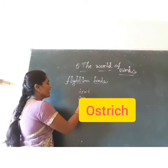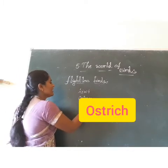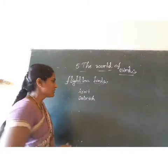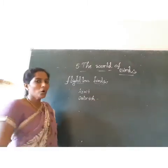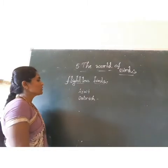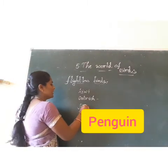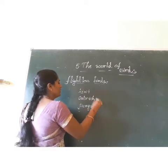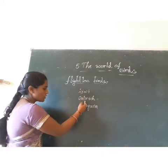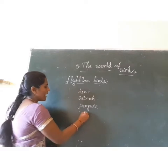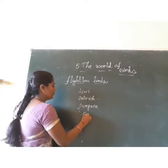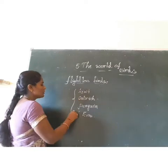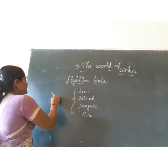Ostrich — O-S-T-R-I-C-H. You have observed this many times in your previous class books. This is a big bird. And also penguin — P-E-N-G-U-I-N. And also emu. Kiwi, ostrich, penguin, and emu — these are the four birds we call as flightless birds.